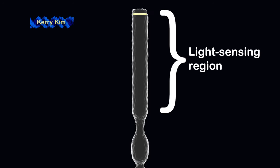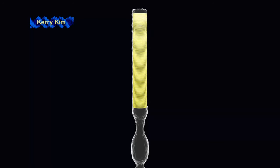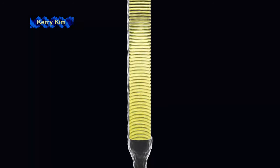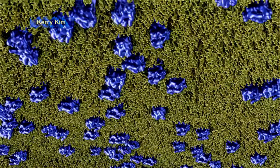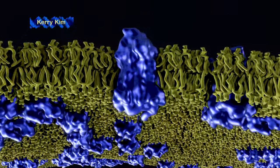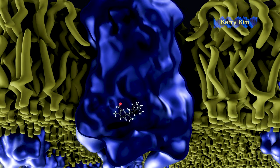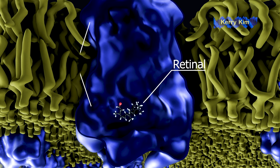The light-sensitive region of the rod is here, where inside there are numerous disc-shaped structures stacked atop each other. These discs are membranes that contain millions of light-sensing molecules called rhodopsin. What happens when light activates rhodopsin? Rhodopsin has two parts, a small molecule called retinal, attached to a protein called opsin.